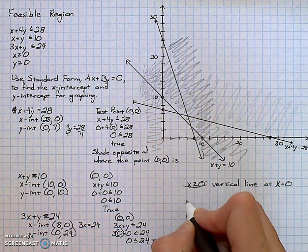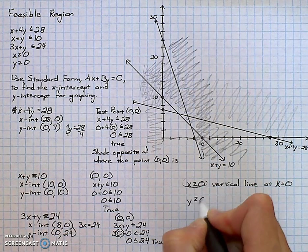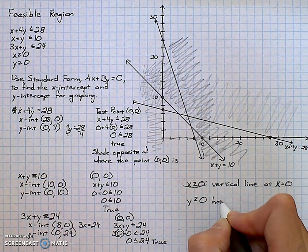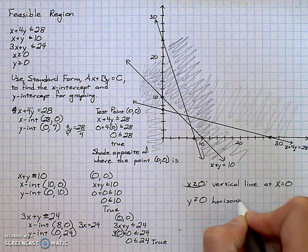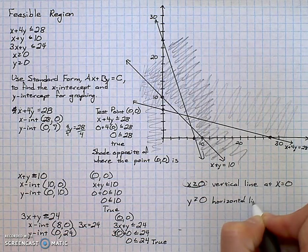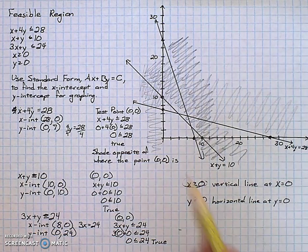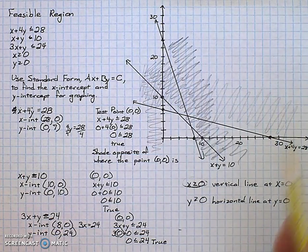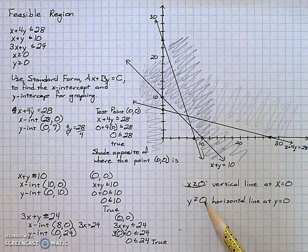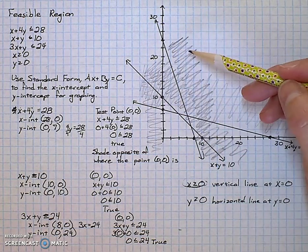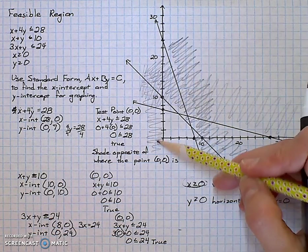And for the last one, y is greater than or equal to 0. This would be a horizontal line at y equals 0, which is really the x-axis. y is greater than or equal to 0 would be above. For the true aspect, the false aspect would be below.